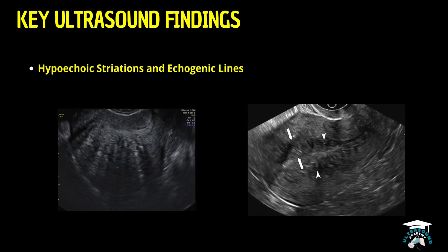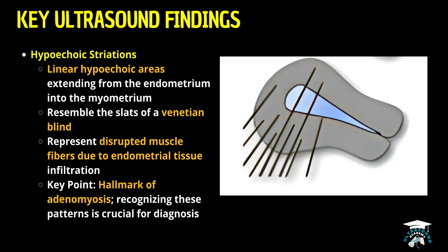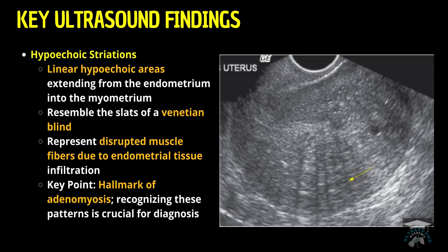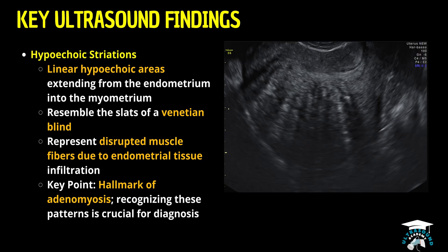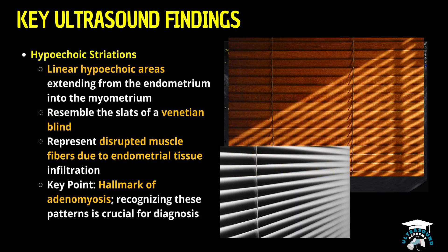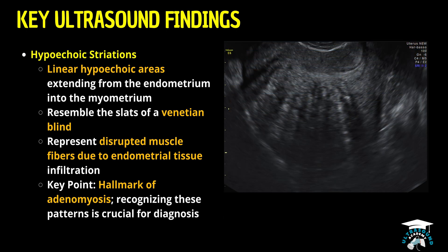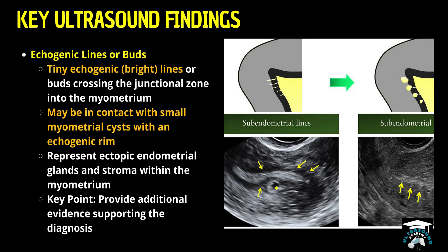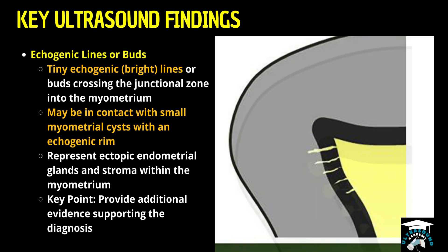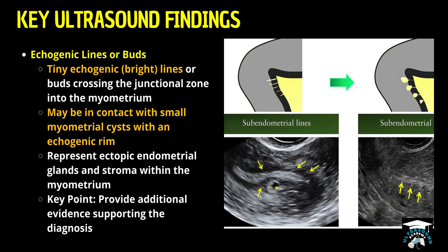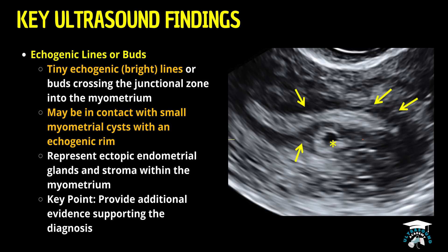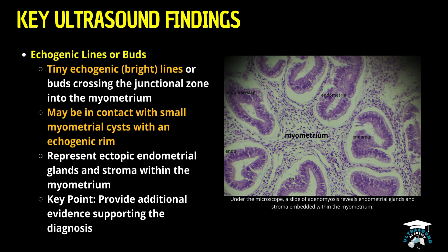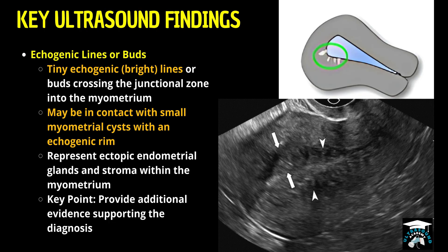Now let's delve into hypoechoic striations and echogenic lines. Hypoechoic striations are fine, linear hypoechoic areas extending from the endometrium deep into the myometrium, often running perpendicular to the endometrial lining. We often refer to them as Venetian blind striations because they resemble the slats of a Venetian blind. These striations represent disrupted muscle fibers caused by the infiltration of endometrial tissue into the myometrium. In addition, you may observe tiny echogenic bright lines or buds crossing the junctional zone into the myometrium. These echogenic features might be in contact with small myometrial cysts that often have an echogenic rim, representing ectopic endometrial glands and stroma within the myometrium. Paying attention to these bright lines or buds can provide additional evidence supporting the diagnosis.